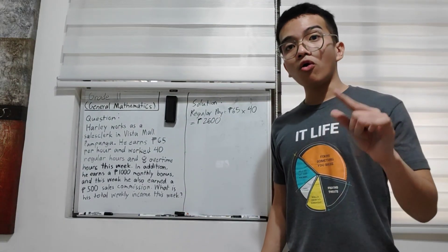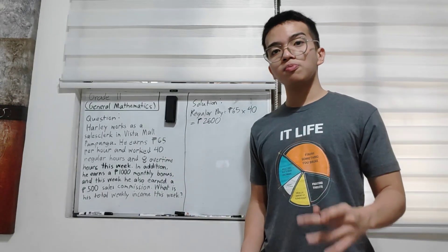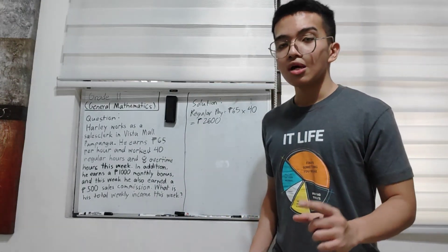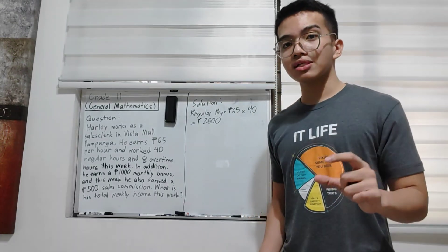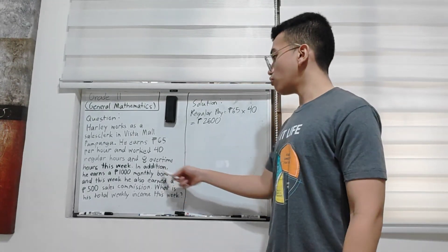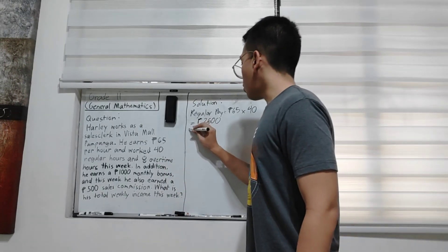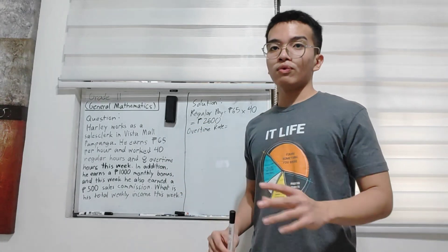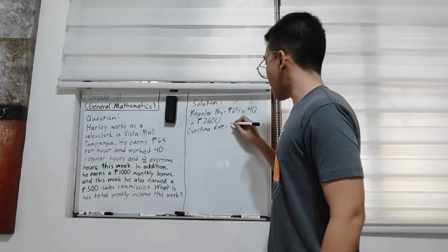As I mentioned, the overtime pay is different from the regular hourly rate. The rule is: when an employee works overtime, they receive an additional 25 percent on top of their regular payment. Harley has eight overtime hours this week, so we calculate the overtime rate. We take his regular pay of 65 pesos per hour...